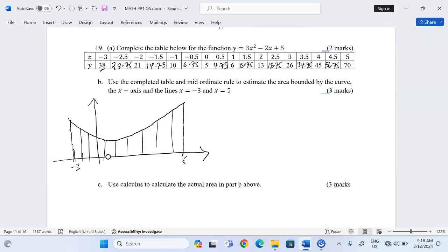Because we are using the mid-ordinate rule, we don't use the values of y at negative 3, negative 2, negative 1, 0. Those are not the values of y we use. Because we are using the mid-ordinate rule, if a strip is from negative 3 to negative 2, we use the middle part of it, and that is the value of x. The value of y at x equals negative 2.5.